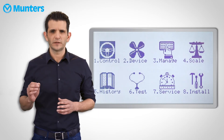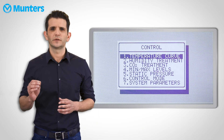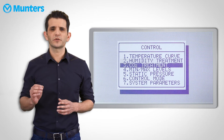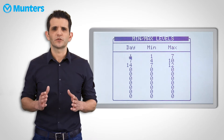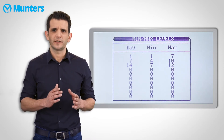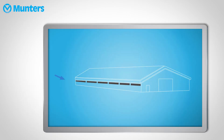To reduce the minimum, press the menu button and go to Control menu. In Control, select Min-Max Levels, scroll to the appropriate day, and simply change the minimum. Remember, the minimum is important for fresh air movement in the house and should be reduced responsibly.